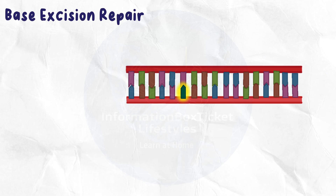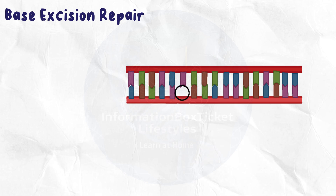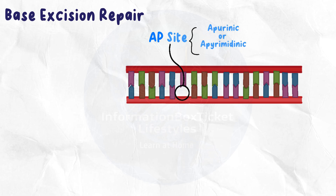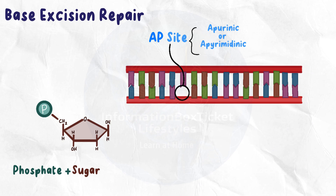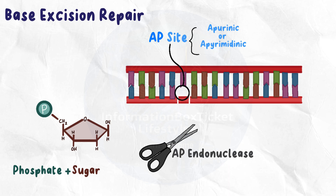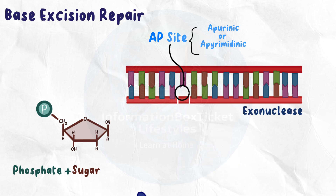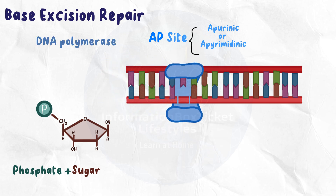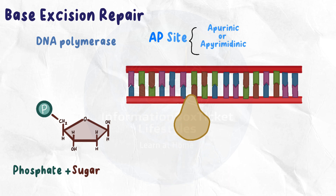Nitrites can wreak havoc on DNA, much like a baby rearranging the letters in your paper. Base excision repair relies on glycosylase enzymes, which remove the damaged base and leave behind a small gap known as an AP site — apurinic or apyrimidinic — reducing the nucleotide to its sugar and phosphate group. The links are then severed by AP endonuclease, an exonuclease eliminates them creating a gap, and finally DNA polymerase fills the gap with new nucleotides while DNA ligase seals the bonds.